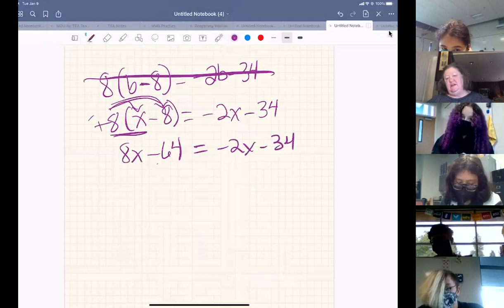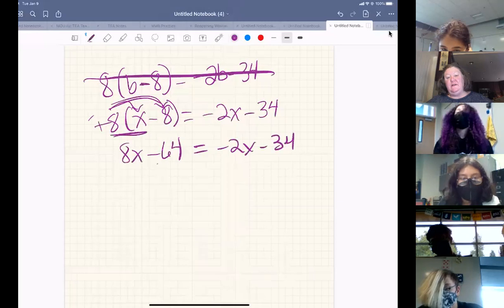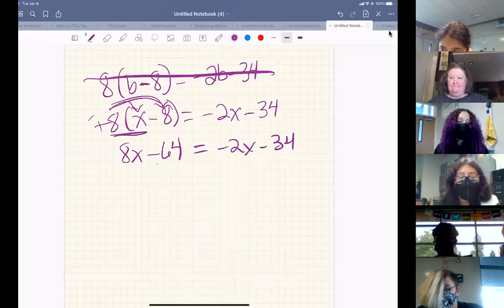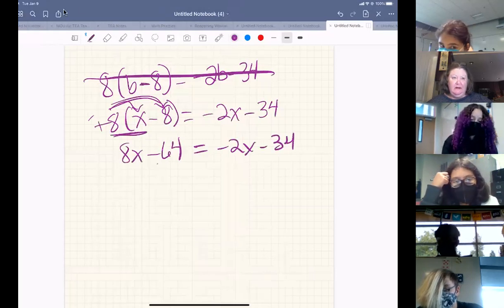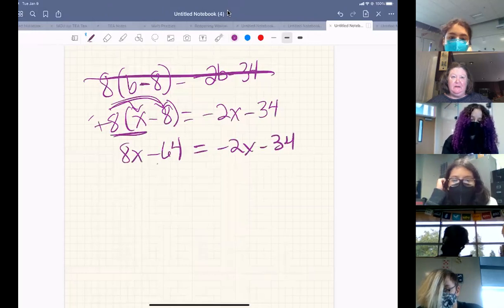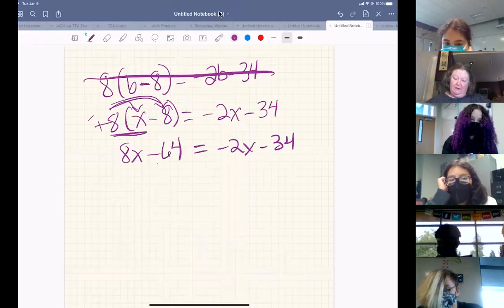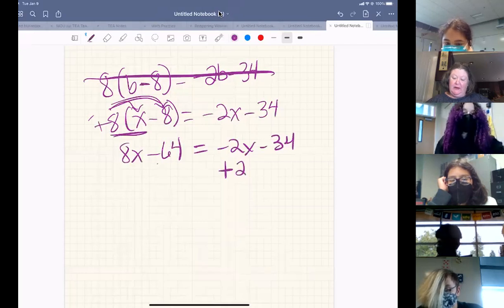What makes this challenging is we've got a variable on both sides of the equation. So we can't look for that zero necessarily yet. We have to get the X's together on one side of the equation.